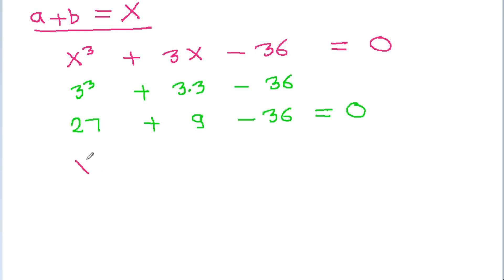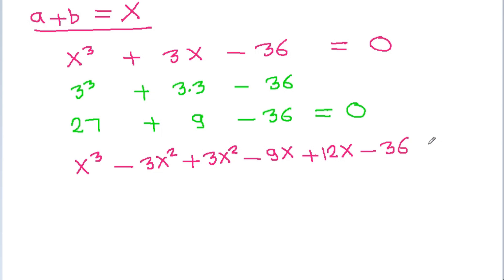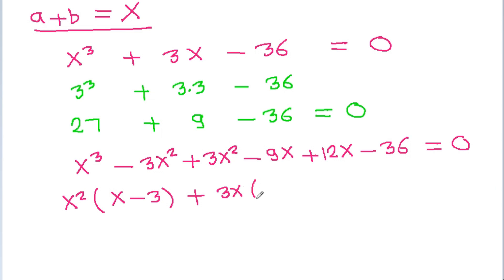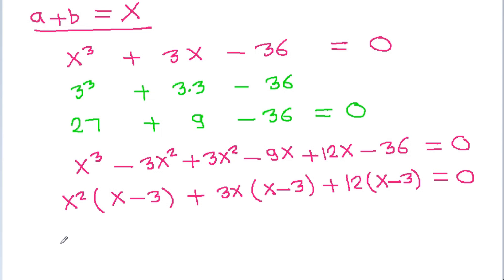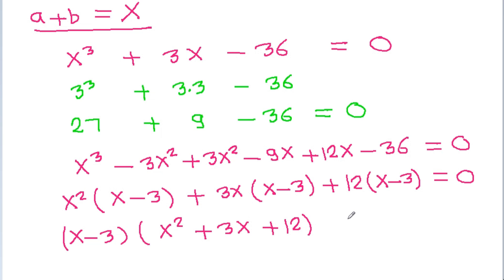So it is x cubed, and if we subtract 3x squared and add 3x squared, and 3x minus 9x minus 36 minus 36 is equal to 0. And it is x squared times (x minus 3) plus 3x times (x minus 3) minus 12 times (x minus 3) is equal to 0. We can take (x minus 3) common, and it is (x minus 3)(x squared plus 3x minus 12) is equal to 0.